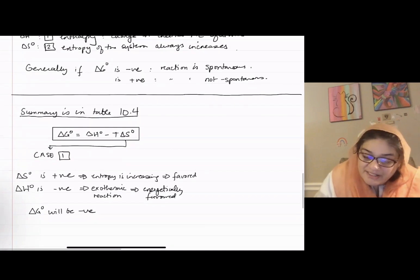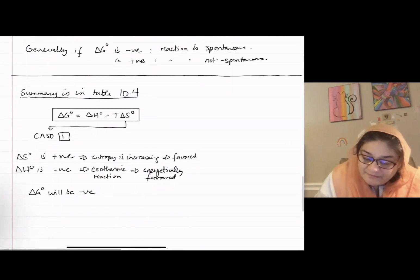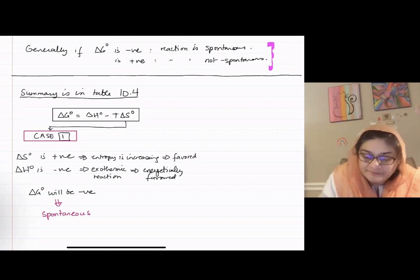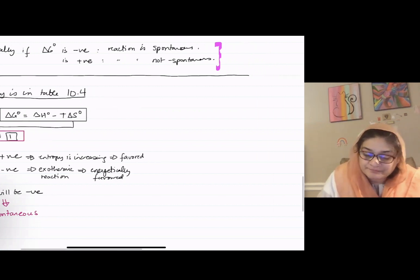Which implies that ΔG° on the whole will be negative. And what did we say if ΔG is negative? Will that be a spontaneous process or not spontaneous? Spontaneous.